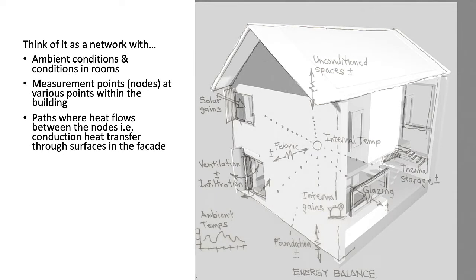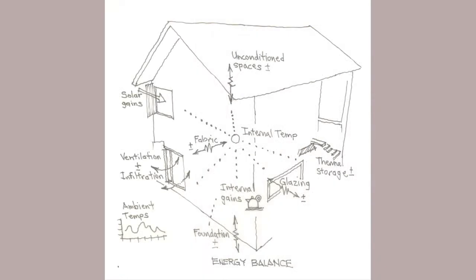One way to imagine an energy balance is as a network. A diagram with nodes where we measure temperatures, humidity, and other things, and then a path between nodes where heat or air or radiation might travel. A simple arrangement of nodes would have one that represents ambient conditions and one which represents the average state of the rooms in the building.